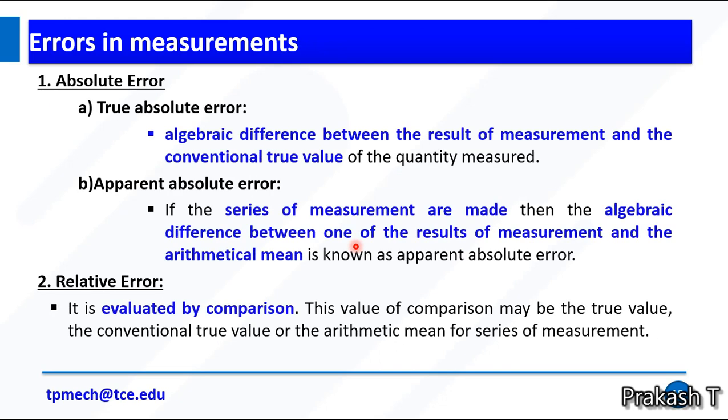Absolute error has two classifications: true absolute error and apparent absolute error. True absolute error is the algebraic difference between the results of measurement and the conventional true value. Apparent absolute error: if a series of measurements are made, then the algebraic difference between one of the results of measurements and the arithmetic mean is known as apparent absolute error.